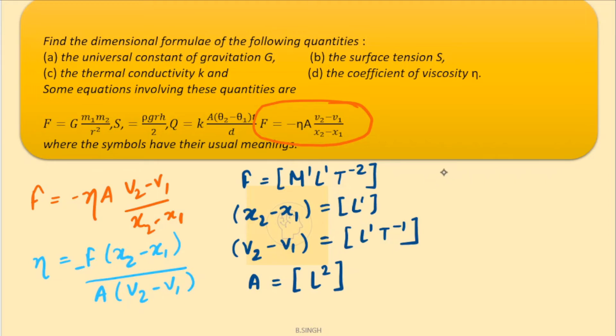Viscosity eta will be equals to force. Force is M1 L1 T minus 2 multiplied with the length difference, which is a length. So, simply L1 whole divided by area, which is L2 and the velocity difference that is L1 T minus 1.